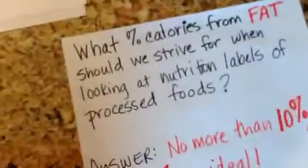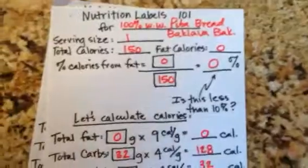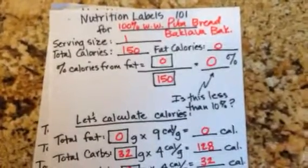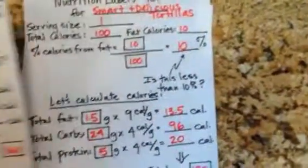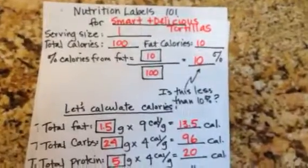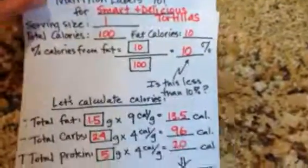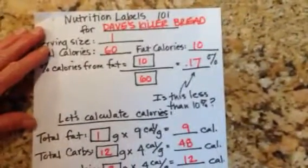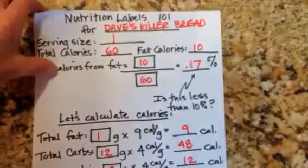Let's look at some breads. You need to look at nutrition labels for breads because you want to make sure it says whole wheat or whole rye. You don't want to see the words 'enriched' or 'multi-grain' — you want the word 'whole.' Pita bread by Baklava — zero fat. Smart and Delicious tortillas have one with only 10 calories of fat, great for wraps. Dave's Killer Bread is delicious — even in Walmart now — a little higher in fat but has lots of whole grains and seeds.